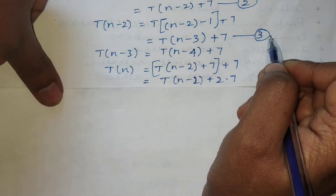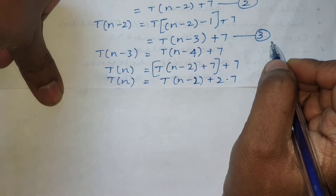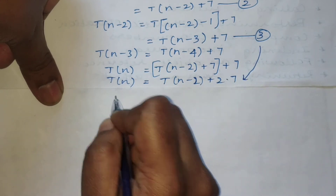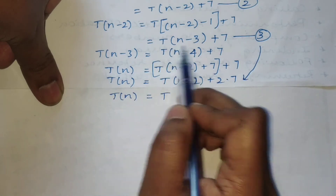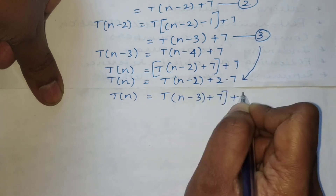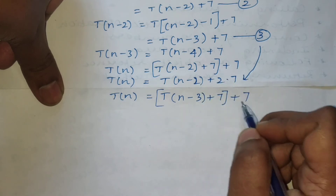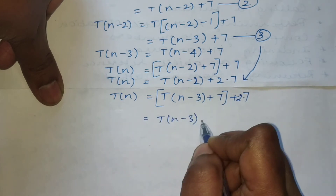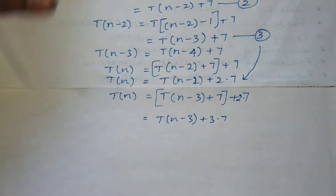Next, we substitute the third equation into this step. In the place of T(n-2) we substitute T(n-3) + 7. We already have 2×7, and one more 7 is added, giving T(n) = T(n-3) + 3×7.